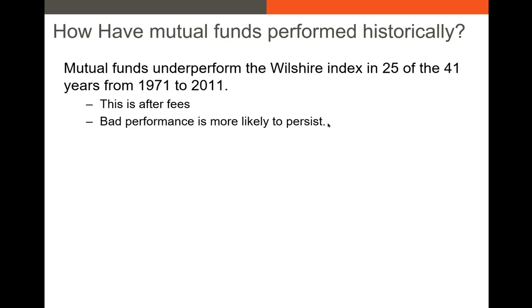They also found that bad performance was more likely to persist. In other words, the bad managers — the managers that underperformed, so they had negative alpha or they underperformed their Lipper averages — they continued to underperform.